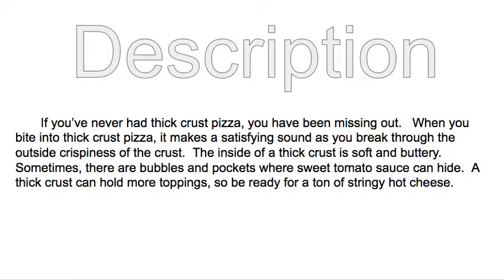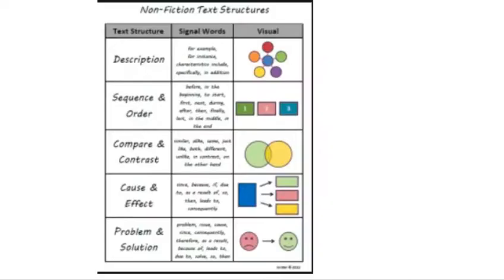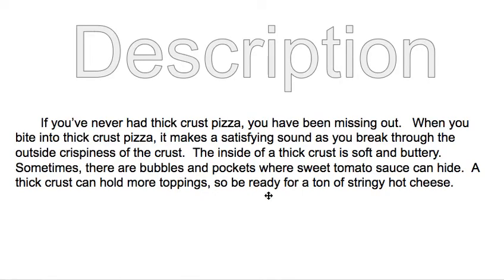So the author decided that they were going to organize the facts using description. The author first created a web, putting thick crust pizza in the center. Then the author described that thick crust as many ways as they possibly could — what does the thick crust look like, sound like, smell like, taste like, feel like, and other facts having to do with thick crusts. After the author created this web, they used the facts to write the passage.